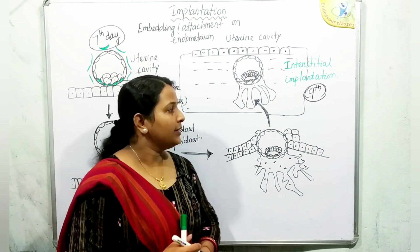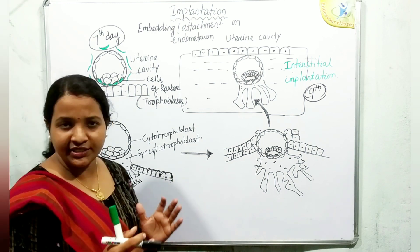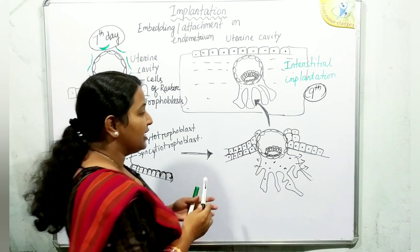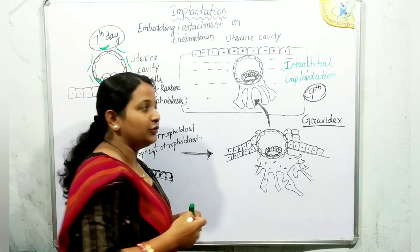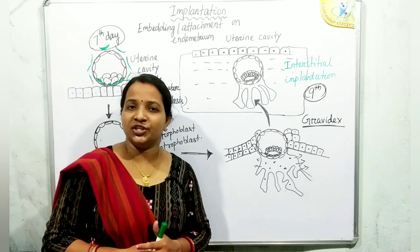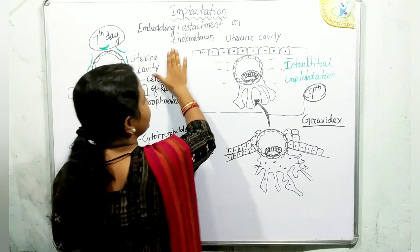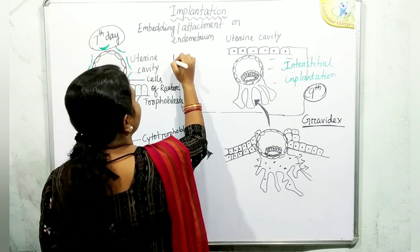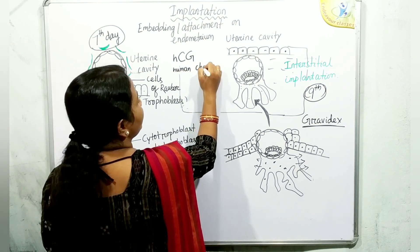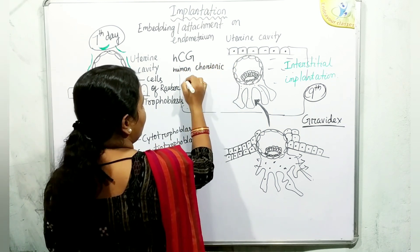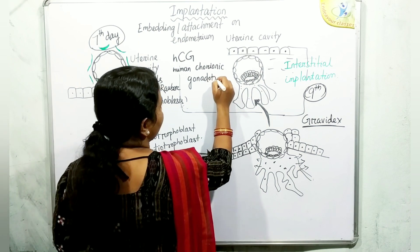When a missed period occurs, the female goes for a urine check called the Gravidex test. This is a urine test in which we check for the presence of hCG — human chorionic gonadotropin hormone — which is secreted by the trophoblastic cells.